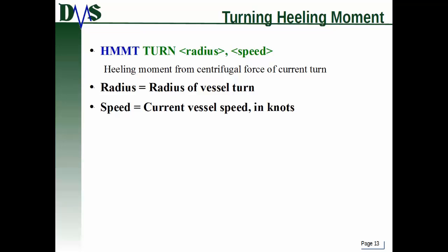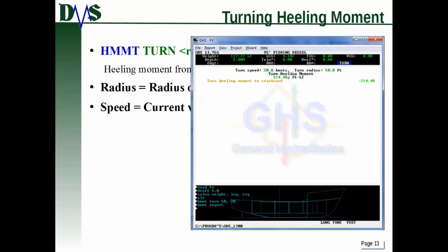Now let's turn to a different type of heeling moment: the heeling moment churn command. The keyword is churn, then you specify the radius of your vessel's turn and the speed. That will create a heeling moment from the centrifugal force of your current vessel turn. Radius is in your current length units and speed is in knots. For example, HMMT churn 50, 20 — a churn radius of 50 feet and a turning speed of 22 knots — and it's heeling pretty hard.